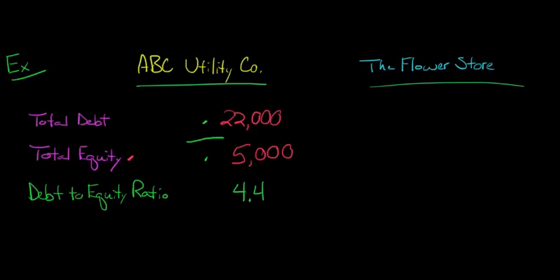Let's take a look at The Flower Store and see what their debt-to-equity ratio is. They have debt of $24,000, and their total book equity is $16,000. To compute their debt-to-equity ratio, we just take the total debt and divide it by the total equity. We have $24,000 divided by $16,000, and that's going to give us $1.5.